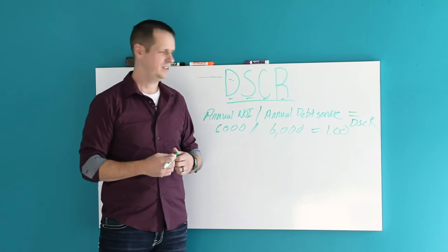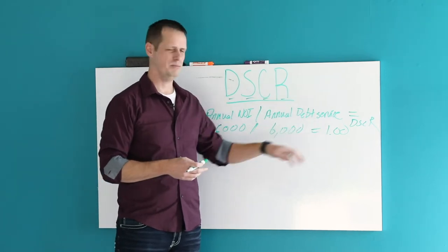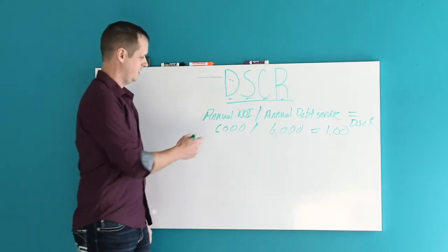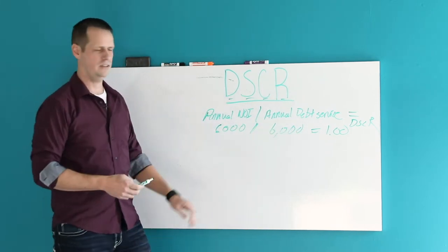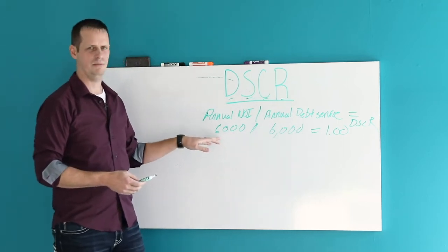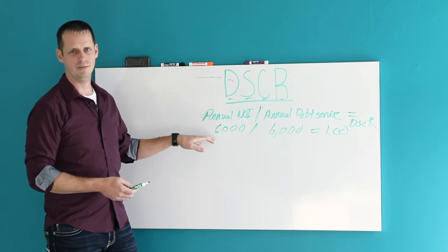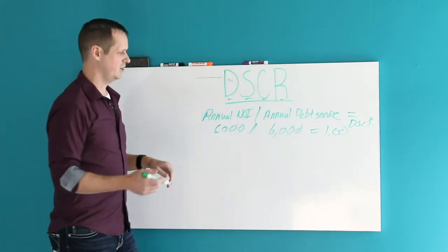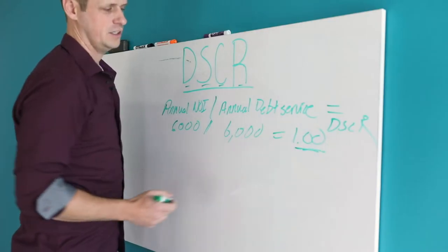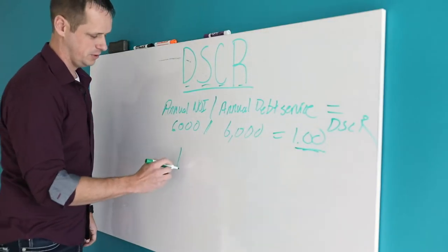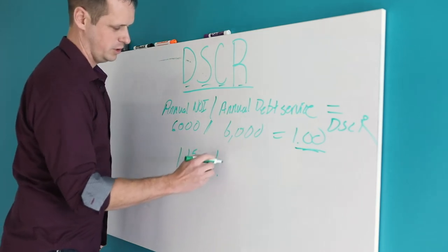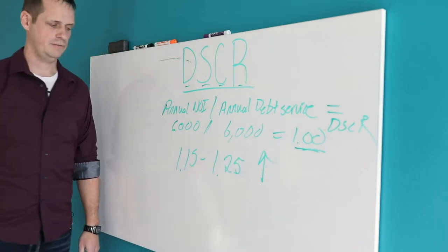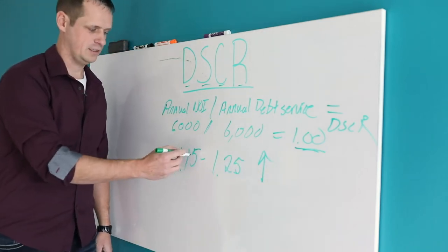Well, it's not necessarily bad because it's not in the negatives or below one, but a bank isn't going to like this number. They're only making $6,000 a year and that's how much the loan costs. Typically, a bank is going to want to see a DSCR somewhere between 1.15 and 1.25 or above.